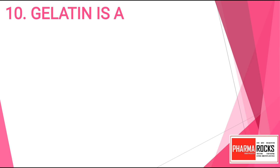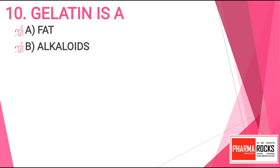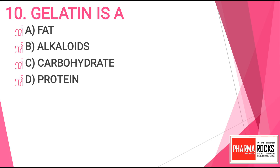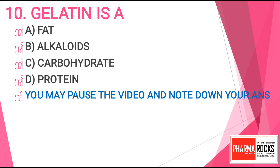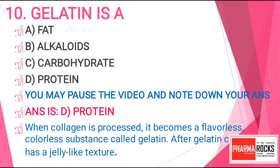Question number 10. Gelatin is a: Option A. Fat. Option B. Alkaloid. Option C. Carbohydrate. Or Option D. Protein. You may pause the video and note down your answer. The correct answer for this question is Option D. Protein. When collagen is processed, it becomes a flavorless, colorless substance called gelatin. After gelatin cools, it has a jelly-like structure or texture.